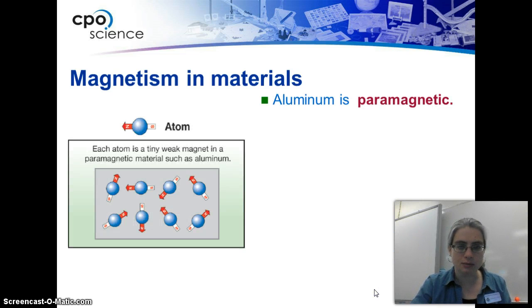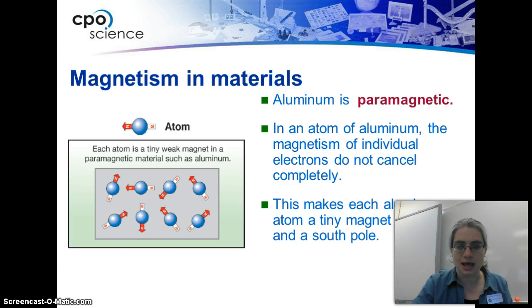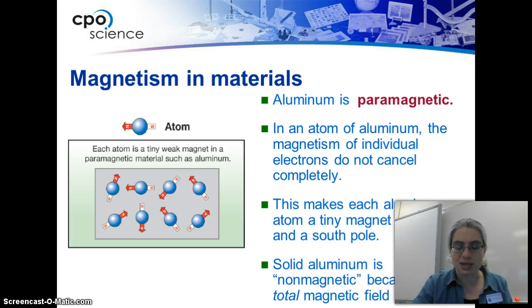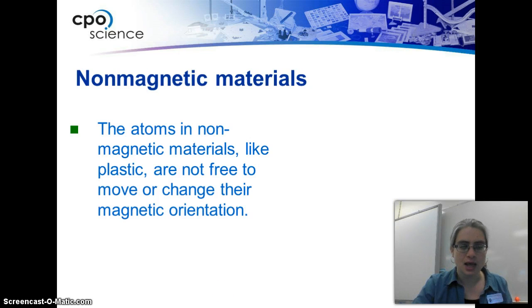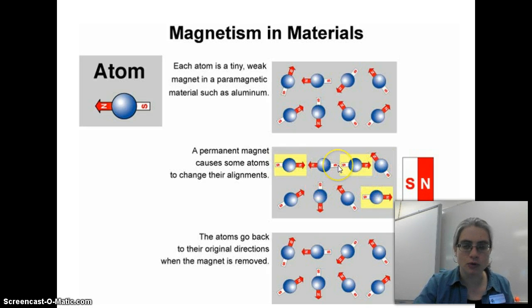Aluminum is paramagnetic, meaning it will respond to magnetism but not induce magnetism in other things. In an atom of aluminum, the magnetism of individual electrons does not cancel out completely, making the aluminum atom a tiny magnet with a north and a south pole. However, solid aluminum is non-magnetic because the total magnetic field averages out to zero. Atoms in non-magnetic materials like plastic are not free to move or change their orientation, so they're stuck and you can never induce a current in them. Electrons in metals are much more free to move than in other materials, which is one of the reasons why metals are more magnetic.